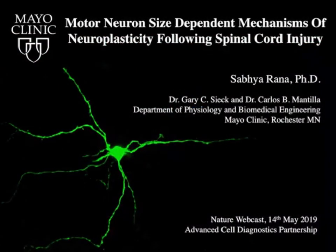Hello to all tuning in and thank you for the introduction. My name is Sabia Arana and I'm a postdoctoral fellow with Dr. Gary Seek and Dr. Carlos Mantilla at the Mayo Clinic in Rochester, Minnesota. Our lab has long been interested in the neuromotor control of breathing and the impact of disease states like spinal cord injury and aging on diaphragm function. Today I will discuss how we have employed fluorescent in situ hybridization technology on the RNA scope platform to study heterogeneity in motor neuron properties and differences in cellular responses within a defined motor neuron pool following a mid-cervical spinal cord injury.